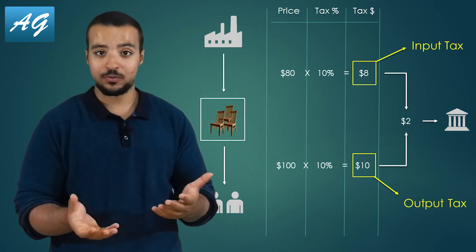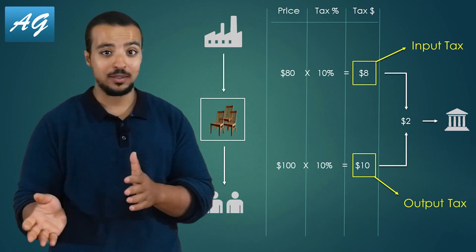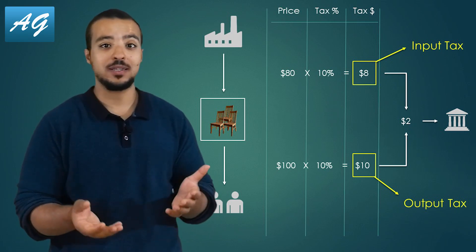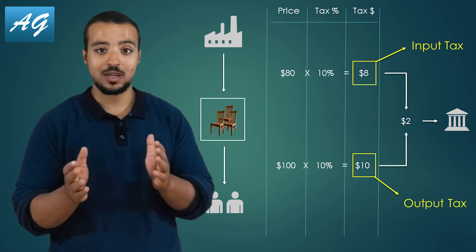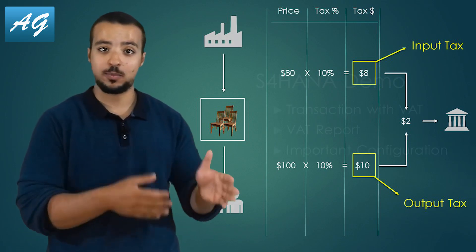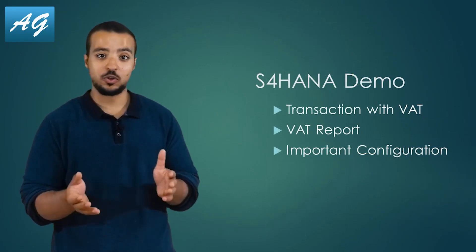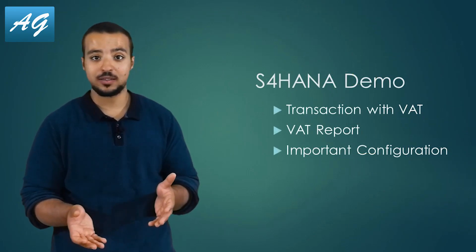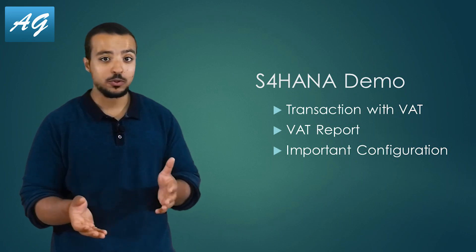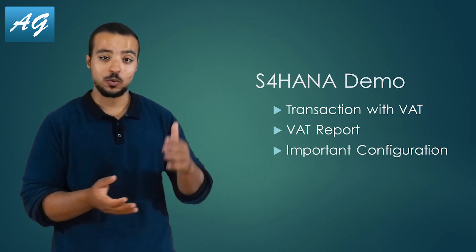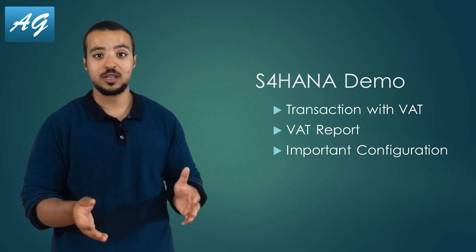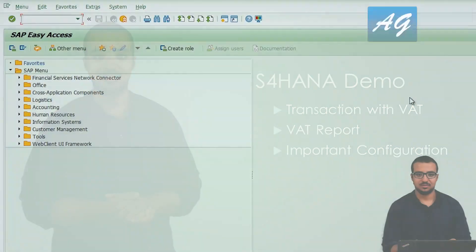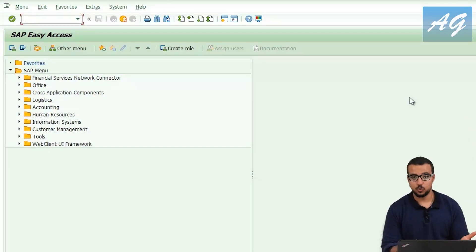In case the amount you paid is higher than what you collected, then the government actually owes you money, and you can ask to deduct this amount from your tax payment for the next period. Now I'm going to demonstrate on SAP S4HANA a transaction using the value-added tax, then show you the reports to report your taxes to the government, and also an overview of the most important configuration steps for value-added taxes.